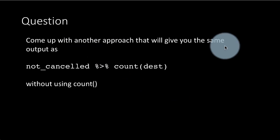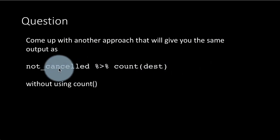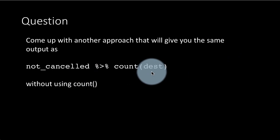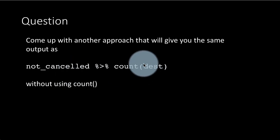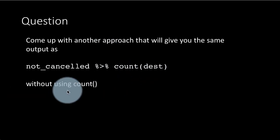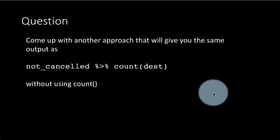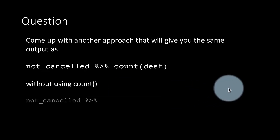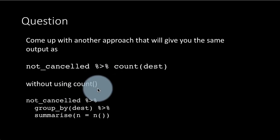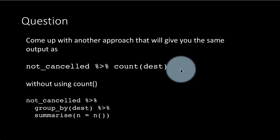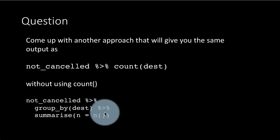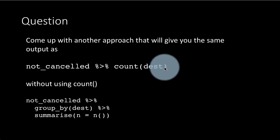Here we are saying come up with another approach that will give the same output as not_canceled count destinations. Let us take the not_canceled table that we created earlier and just count by destination. In other words, for each destination, find out how many rows are there. Try to do this without using count. Of course, the way to do that is count is after all just a short form for group_by summarize. So count is only a short form, a shorthand for group_by destination summarize n equals n. That is really what count does. So this is the way to do it without using count. Of course, one would always prefer to use count. It's just simpler shorter.